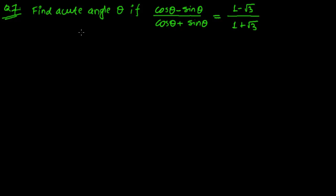Welcome friends once again to the seventh type of equation of trigonometric ratio. The question is: find acute angle theta if (cos θ - sin θ)/(cos θ + sin θ) equals (1 - √3)/(1 + √3).